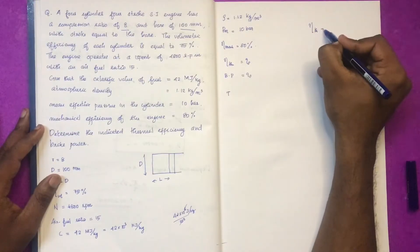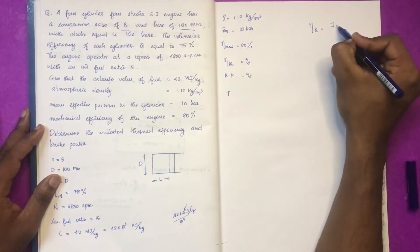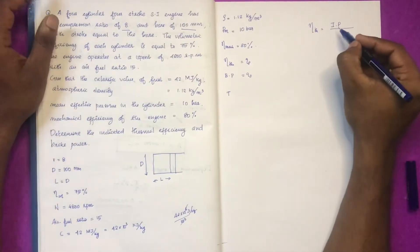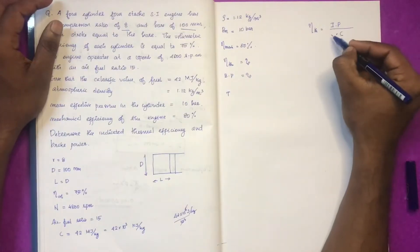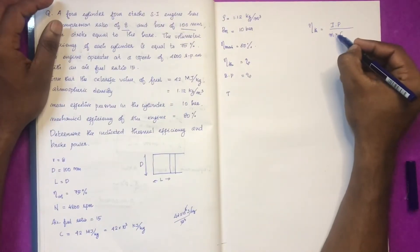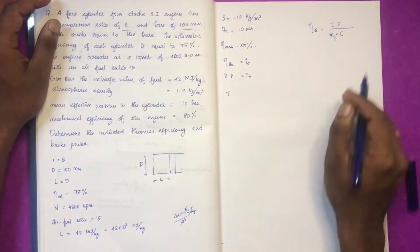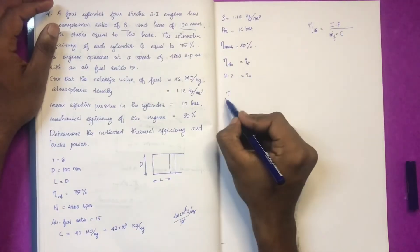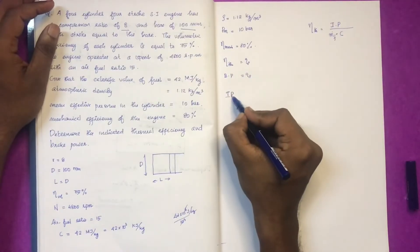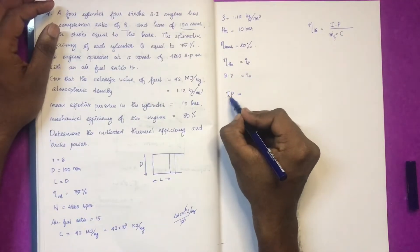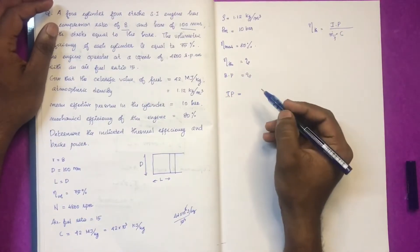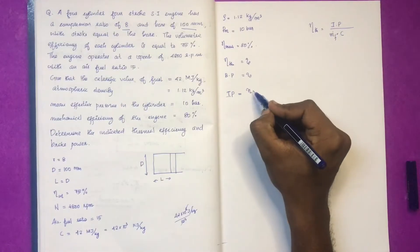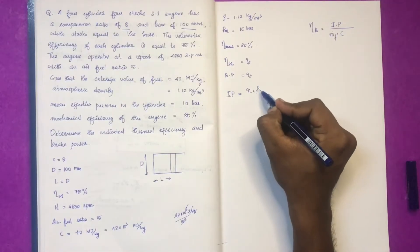The indicator thermal efficiency is equal to indicator power divided by heat supply. Heat supply is equal to calorific value multiplied by mass of fuel supplied. Indicator power is equal to n into P_m.